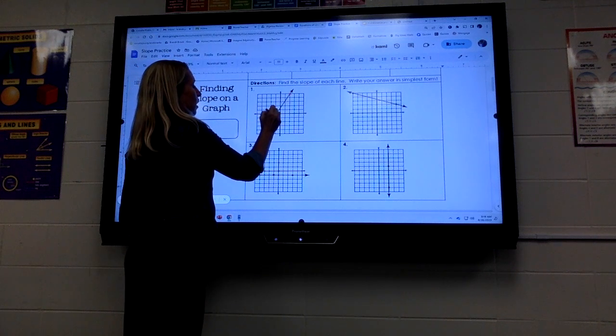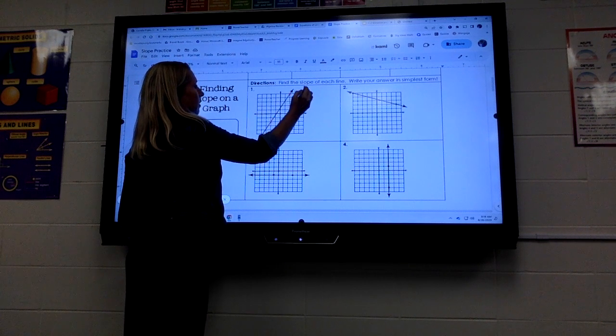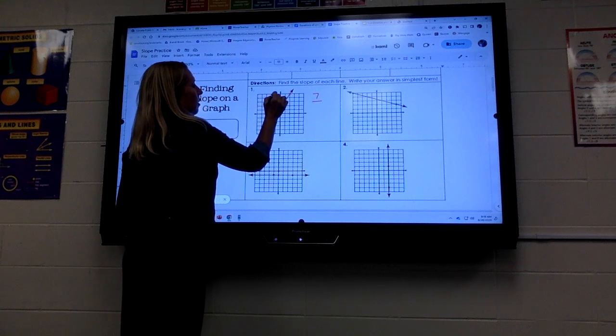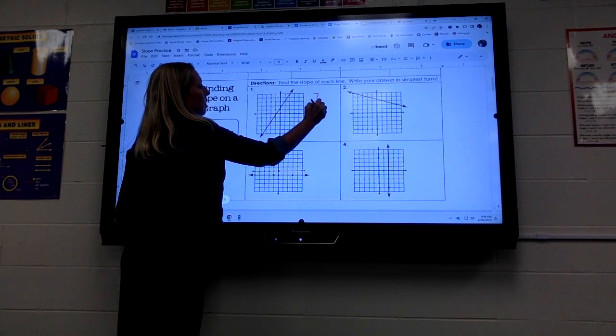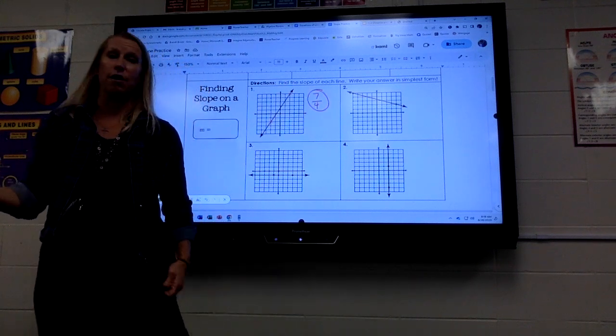So I would rise 1, 2, 3, 4, 5, 6, 7, and I would run 1, 2, 3, 4. That does not reduce, so that would just be your answer.